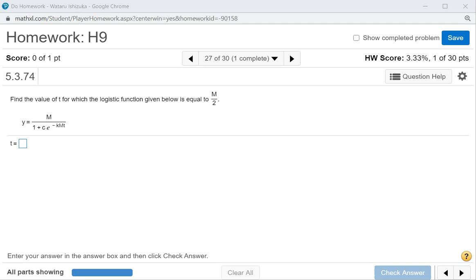Let's look at Homework 9, problem number 27. We want to set this logistic function equal to m over 2, and then try to find the t value. So let's do that.